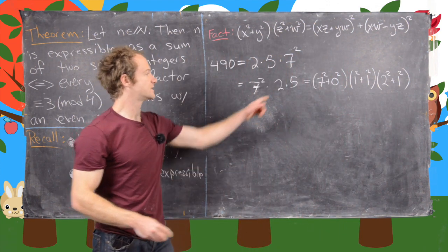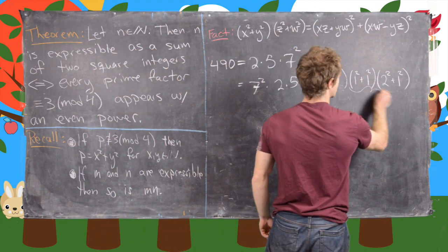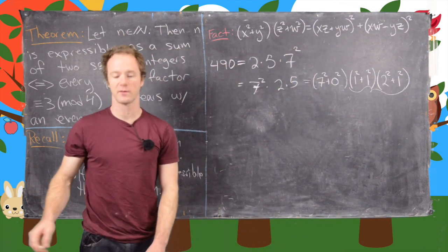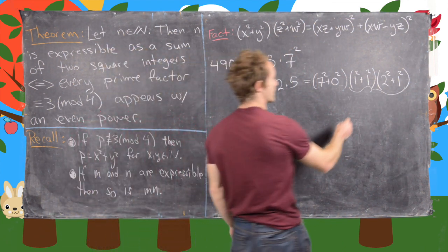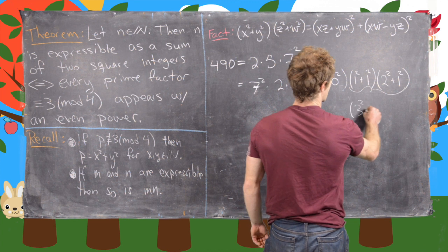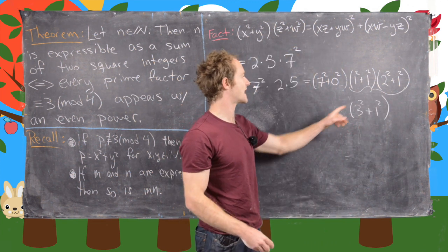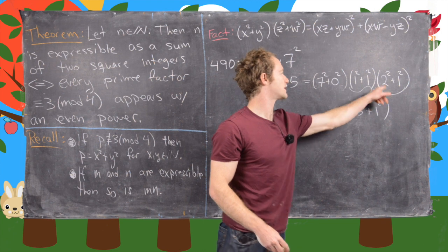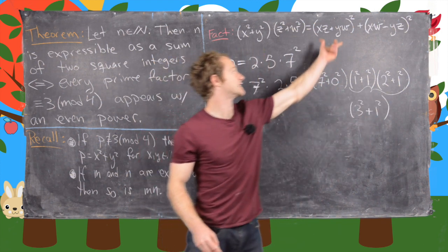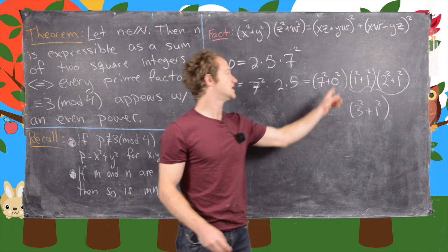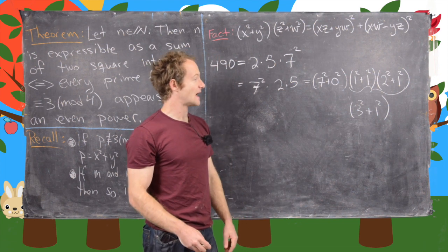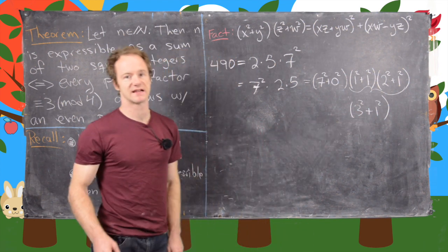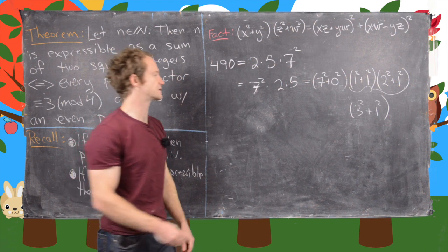Okay, so now putting these last two together using this formula up here gives us 3 squared plus 1 squared. Okay, so let's see why that's the case. That's 2 times 1 plus 1 times 1 all squared. So that's this bit. And then it's 2 times 1 minus 1 times 1, which is 1, which is that second bit. So we have 3 squared plus 1 squared.